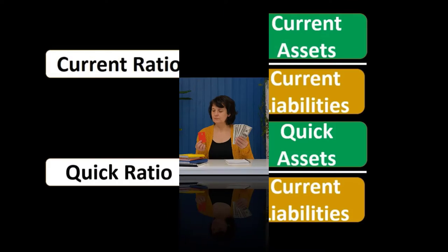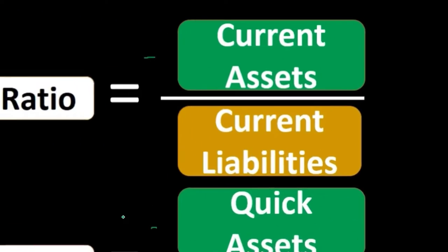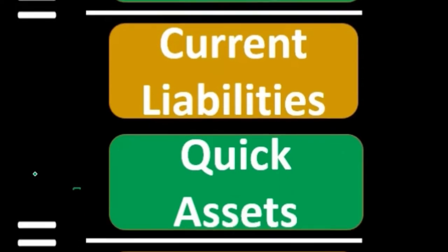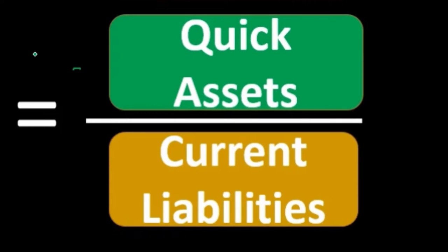We can't usually pay off our current liabilities with property, plants, and equipment. But the quick assets are even going to be more stringent. We're not going to have a subtotal on the balance sheet of quick assets, but what we're really saying is it's going to be the current assets, and we're going to take a few things out, including the inventory.